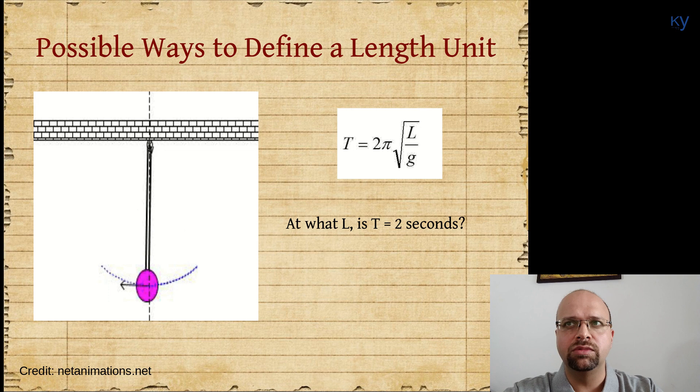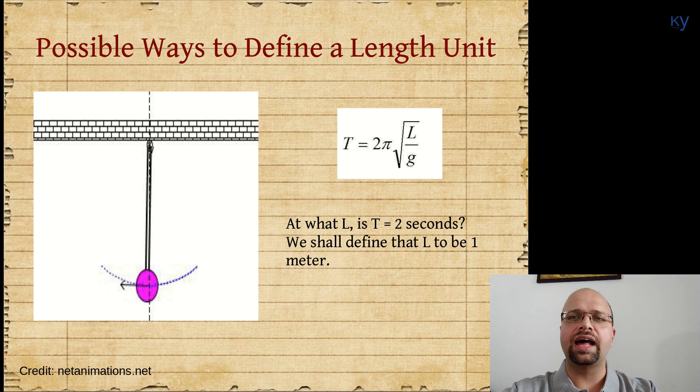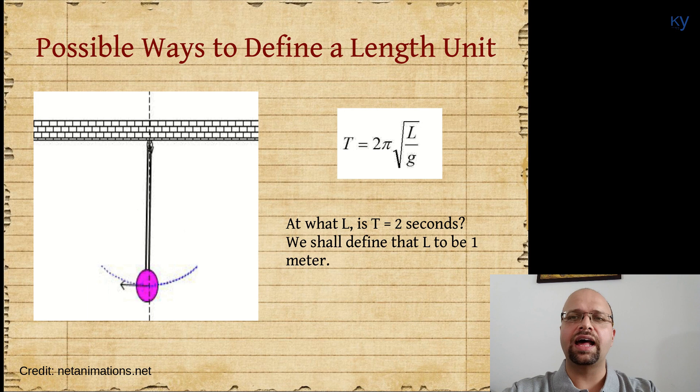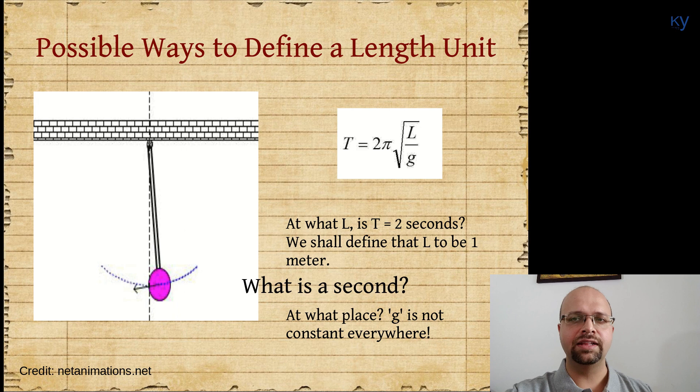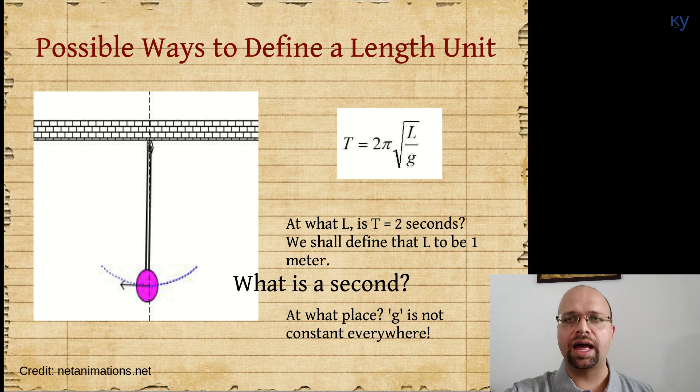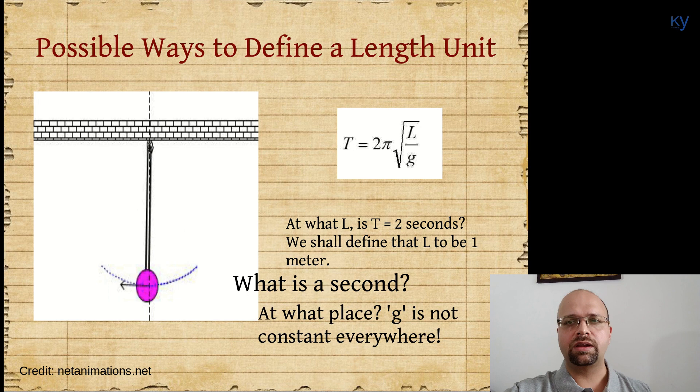The basic proposal was, can we construct a simple pendulum whose time period is two seconds? Then we will define the corresponding length needed to get a two-seconds pendulum as one meter. Now there are two problems with this. First of all, what is a second? Back around the French Revolution we did not have a very reliable definition of a second, so that was not going to be possible.